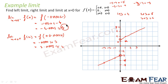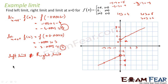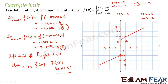So here the left limit is −4 and the right limit is 3. Left limit is not equal to right limit. Since left limit is not equal to right limit, we can say that the limit of f(x) as x tends to 0 does not exist — it is not defined. For x equal to 2 or x equal to 3 or minus 1, minus 2, the limit will exist, but for x equal to 0 it does not.